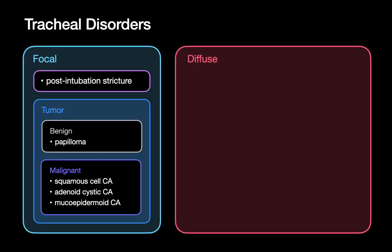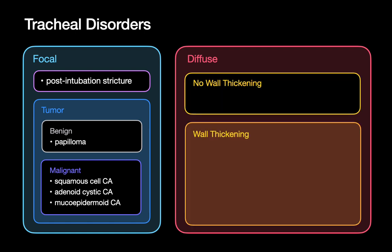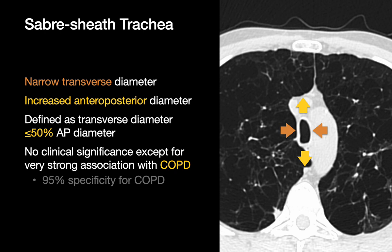That covers focal tracheal disorders and the differential diagnosis to consider. For diffuse tracheal disorders, we can divide them into those not associated with tracheal wall thickening and those that are. The three most common diffuse disorders without wall thickening are saber-sheath trachea, tracheomalacia, and tracheobronchomegaly. The first two are very common — you'll see multiple examples on any given reading day — while tracheobronchomegaly is much more uncommon.